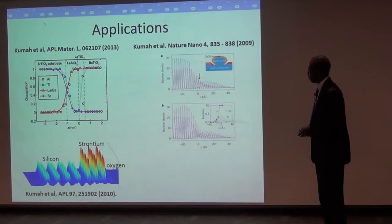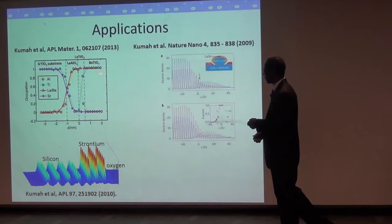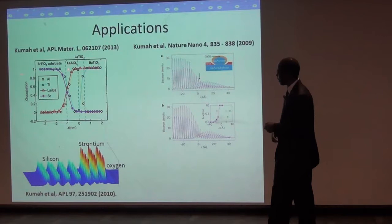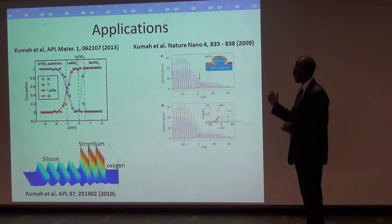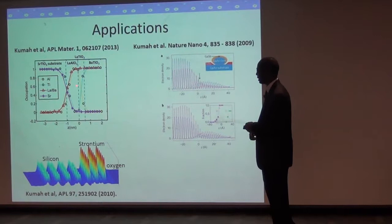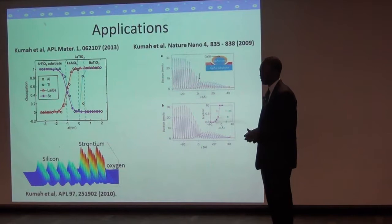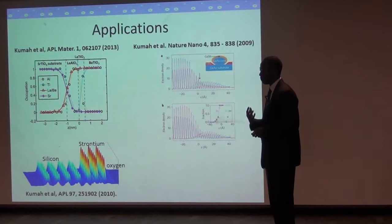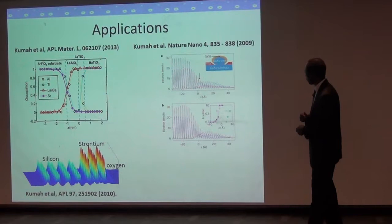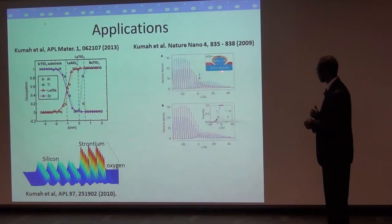This shows an example of real data we've obtained for a lanthanum nickelate film grown on lanthanum aluminate, where the blue regions correspond to empty space and each of the bright dots corresponds to an actual atom. We can tell what type of atoms are in our structure because these intensities are proportional to the atomic numbers. We've applied this COBRA technique for a very wide range of systems, including systems with multiple layers, and for growing complex oxides on silicon and germanium, which is important for making transistor devices.